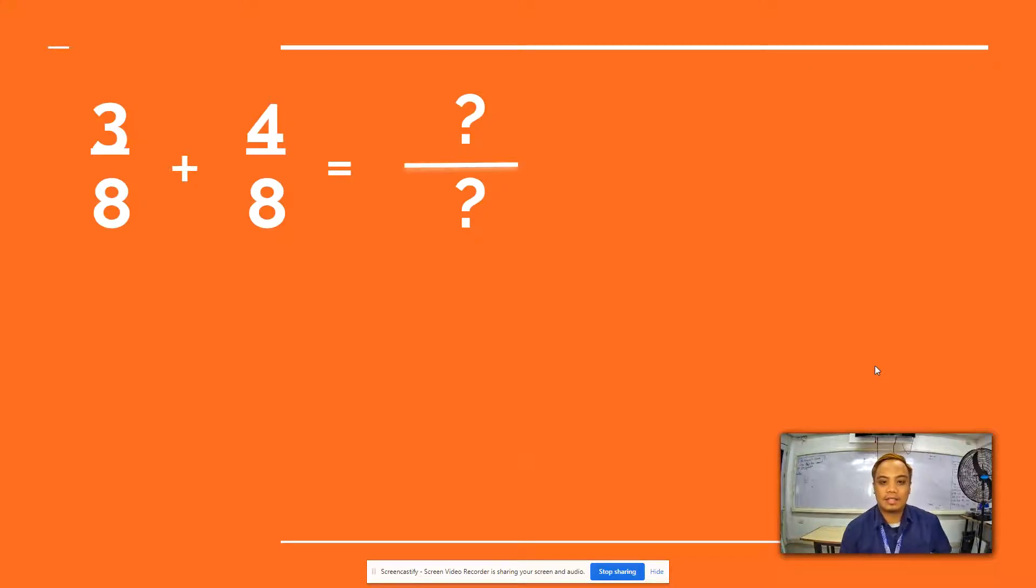Let's start by adding similar fractions. We have 3/8 plus 4/8. The basic steps: first add the numerator, 3 plus 4, that is 7, and then the denominator we will just copy it. So we have 8 as the denominator, so our final answer is 7/8.